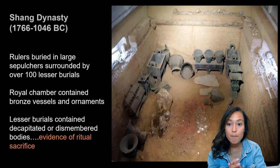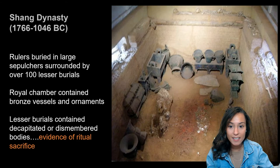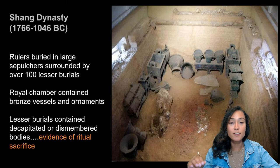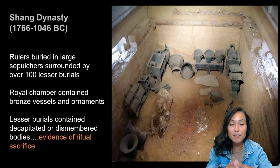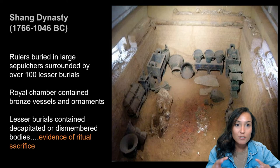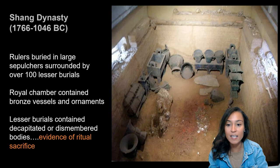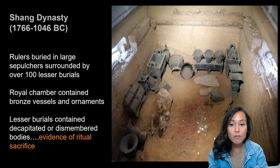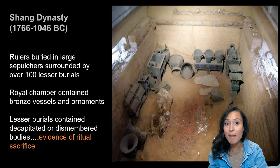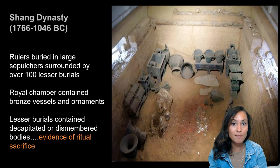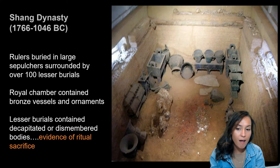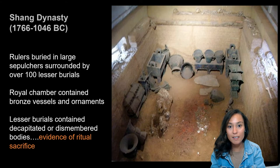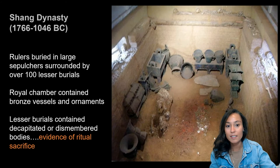Shang rulers buried their dead in cemeteries close to Anyang. The Shang king is surrounded in a sepulchre full of hundreds of lesser burials. We also see chambers that contained superb bronze vessels and ornaments — elaborate burial objects associated with these elite rulers. Excavations of Shang sites in the 1970s revealed that most of the graves associated with royal burials contained decapitated or dismembered bodies, hypothesized to be sacrificial offerings given to the divine ruler of the Shang Dynasty following his death.